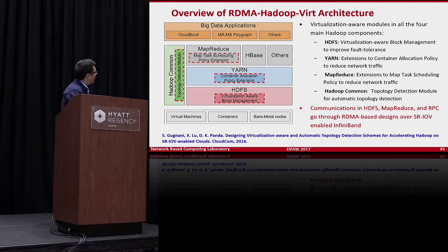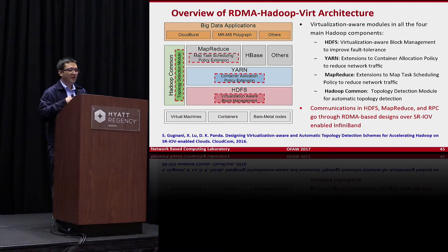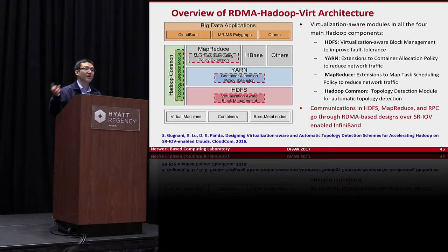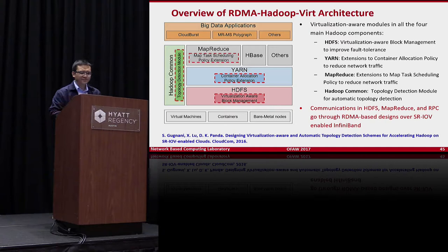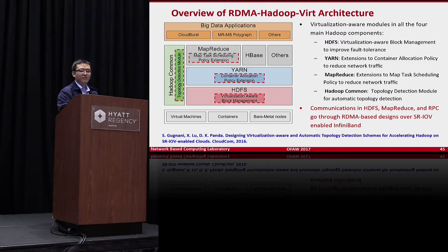The Hadoop architecture has an HDFS layer for storage, a Hadoop Common component providing utilities like RPC and topology information, and a resource manager called YARN that allocates containers and handles task scheduling. On top of that you can run MapReduce, HBase, Spark, and others. We proposed virtualization-aware modules in all four main Hadoop components.